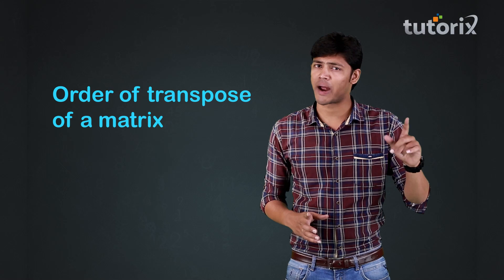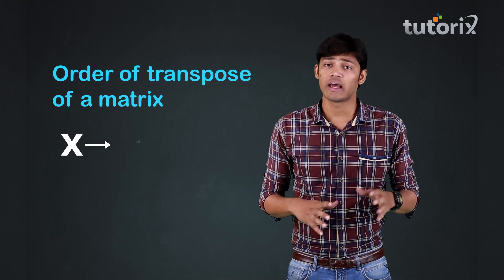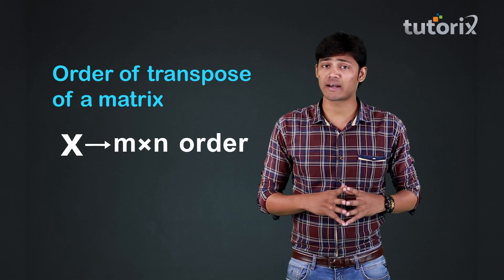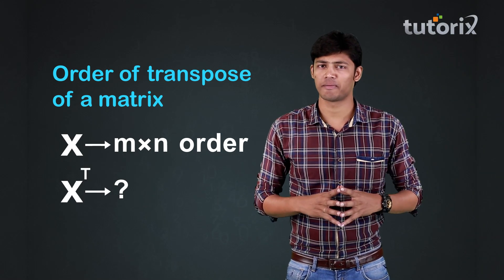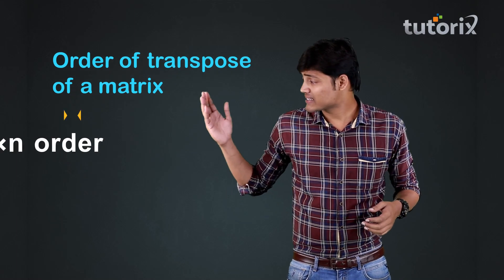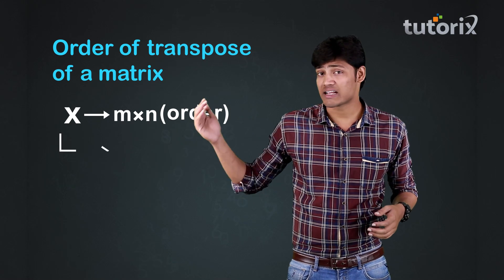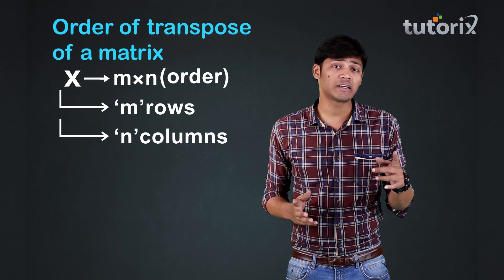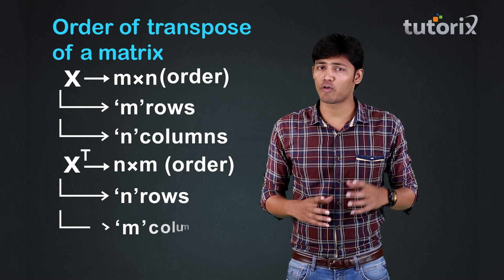Friends, what can we say about the order of the transpose of a matrix? Let us say there is a matrix X whose order is M by N. Is it possible to determine the order of the matrix X transpose? The answer is yes. Since matrix X is of the order M by N, it has M rows and N columns. Now the matrix X transpose will have N number of rows and M number of columns.